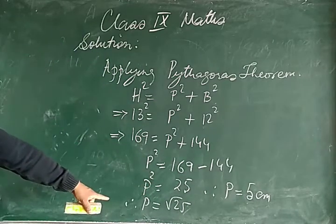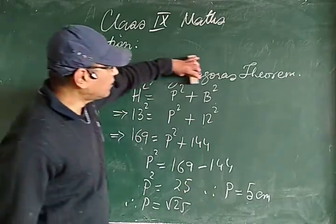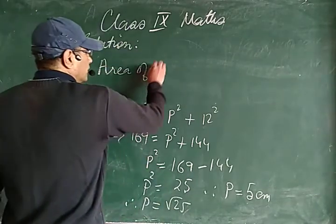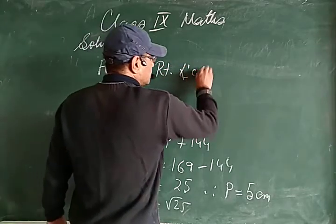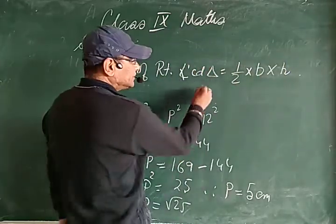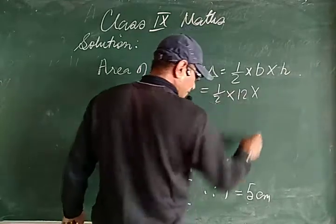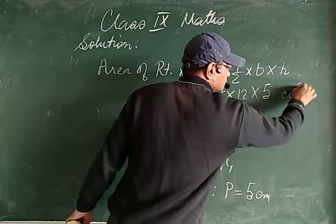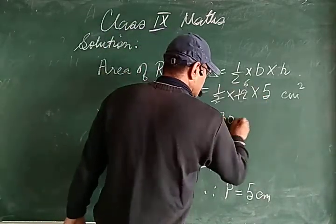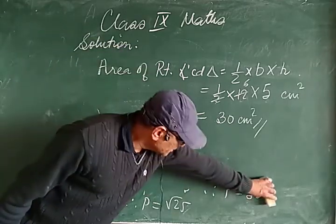Applying Pythagoras's theorem, we got the value of the perpendicular as 5 cm. Now we apply the formula: area of right angled triangle = ½ × base × height = ½ × 12 × 5. Cancelling, the area is 30 centimeters square.